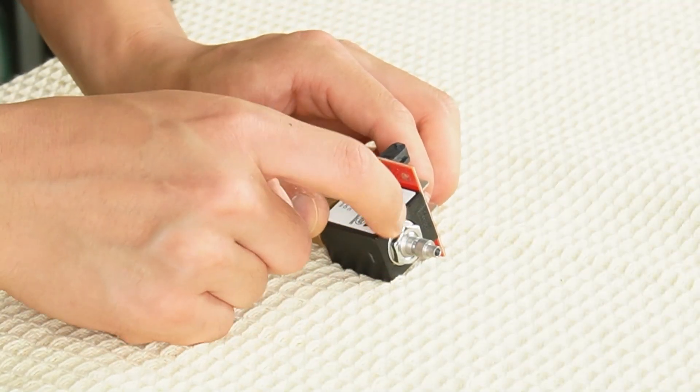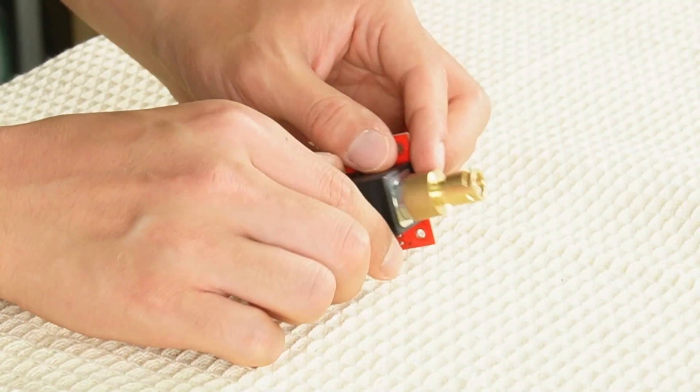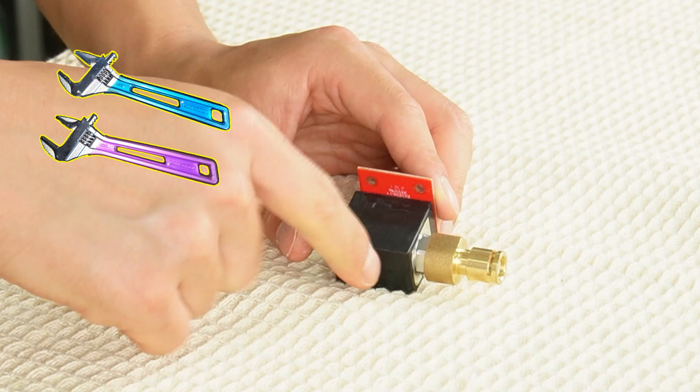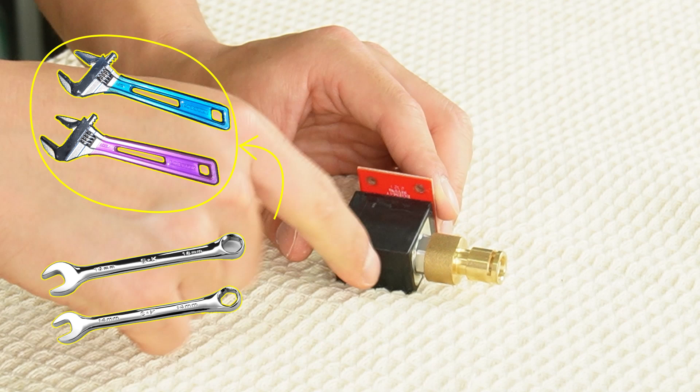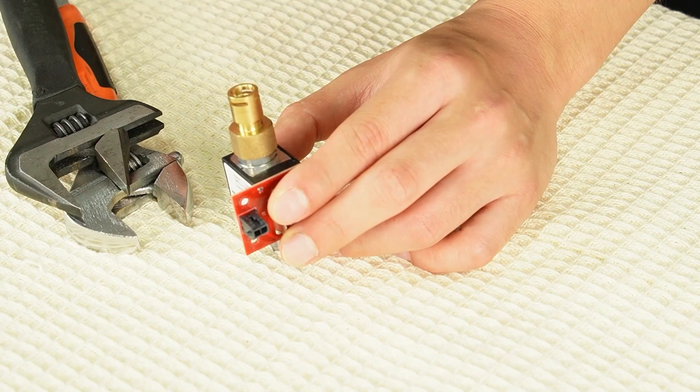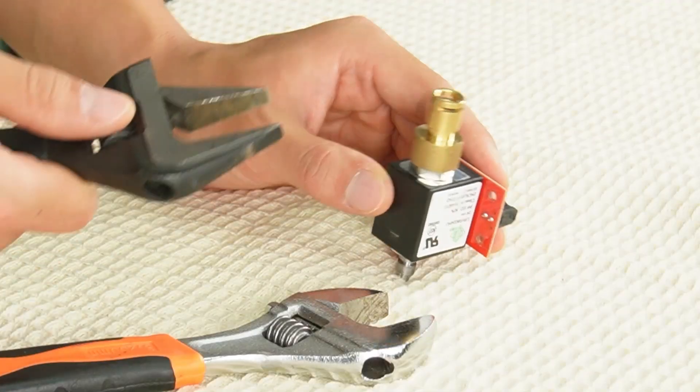Now we will separate the valve body from the coil and housing. You will need two adjustable wrenches or a 14mm and a 16mm wrench. Adjustable wrenches are easier to grip. Hold the brass connector with the 16mm wrench.